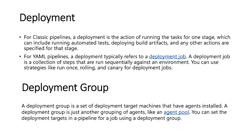Next is deployment. Deployment is when you have a piece of code and you want to deploy it into your environment. In Azure Pipelines, deployment varies by pipeline type. For classic pipelines, a deployment is the action of running tasks for one stage, including automated tests, deploying artifacts, and other actions for that stage. For YAML pipelines, a deployment refers to a deployment job — a collection of steps that runs sequentially against an environment.